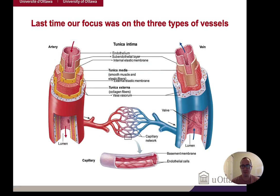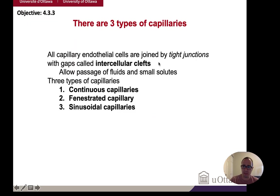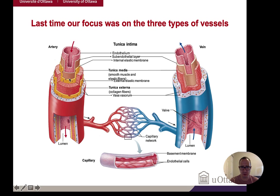Just a review from last time: we focused mostly on definitions and describing the structure of arteries, veins, and capillaries. Blood flow always goes from the arteries through the capillary beds and up through the veins. The structures are very similar — both have a tunica intima, which is in intimate contact with the blood; the tunica media, which contains smooth muscle; and the tunica externa, which is mostly collagen.